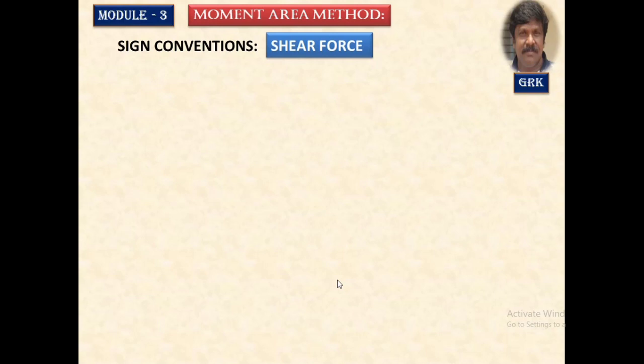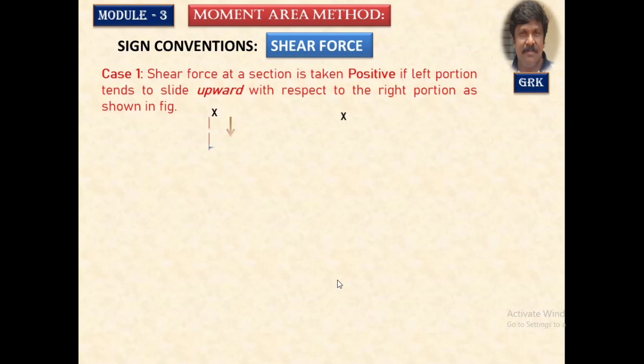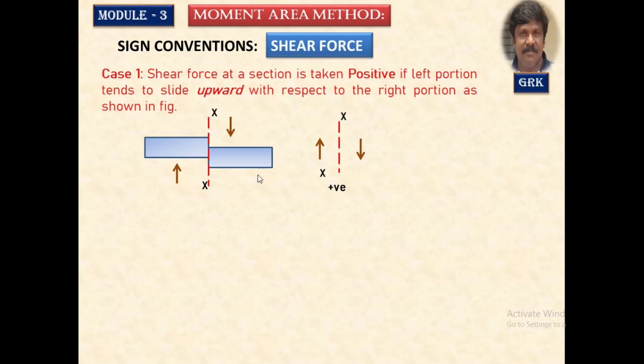These are the two theorems developed by Mohr. To understand and apply them, we need to know the sign conventions adopted here. For shear force — already studied in earlier semesters — if the right part of a section tends to move downward and the left part upward, we take that as positive shear force. This convention will be used extensively in the conjugate beam method.